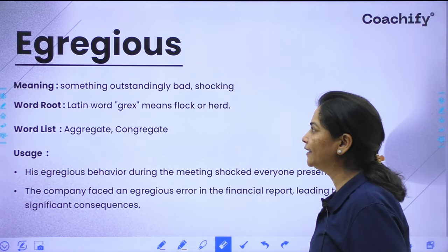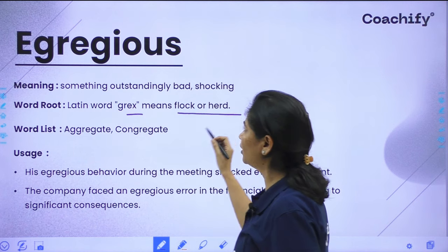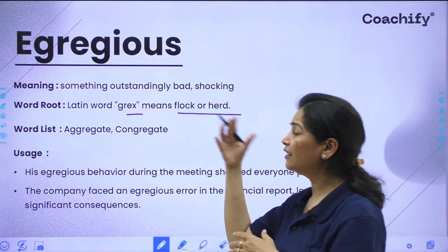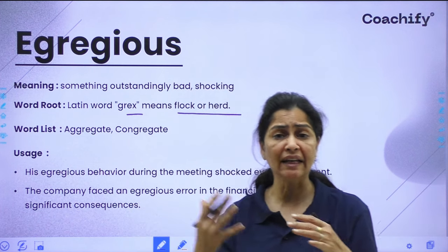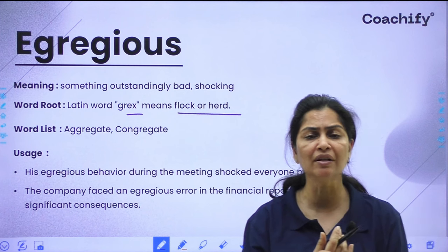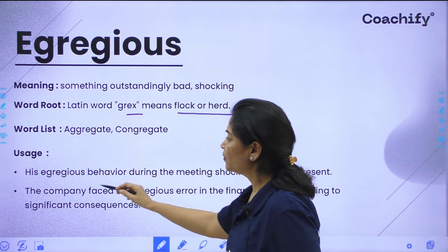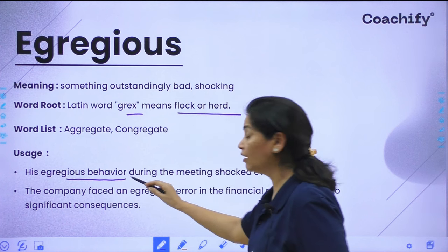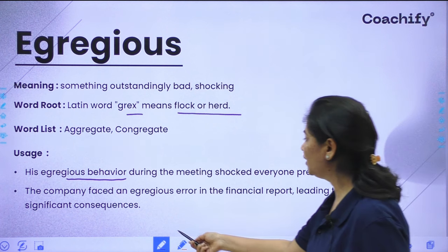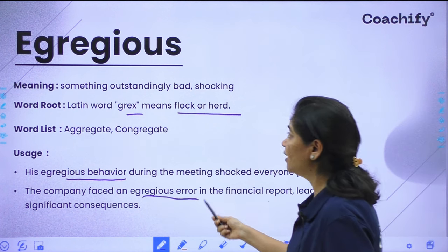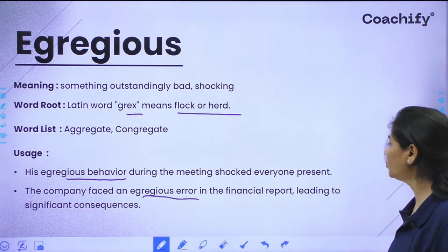The next word is 'egregious.' It comes from the root word 'grex,' meaning flock or herd — standing out from the herd. It means something outstandingly bad or remarkably bad in a negative way. Usage: 'His egregious behavior during the meeting shocked everyone present.' Also: 'The company faced an egregious error in the financial report, leading to significant consequences.'